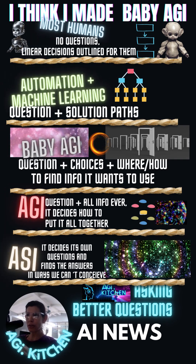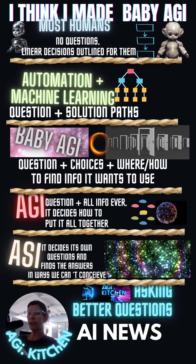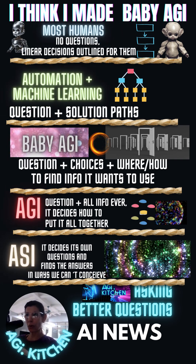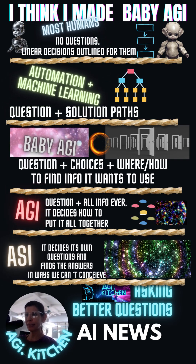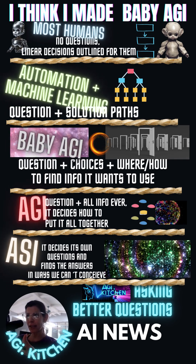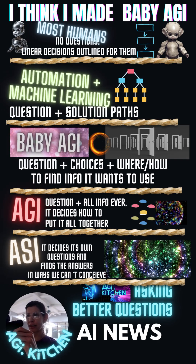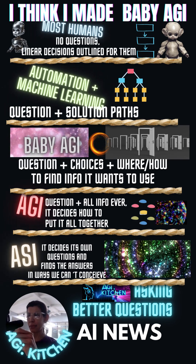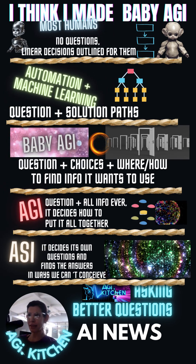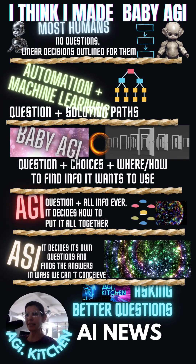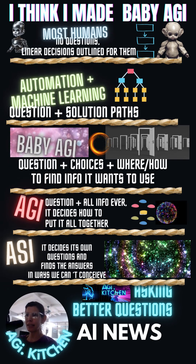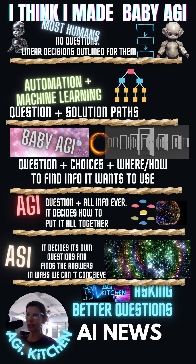ASI, or artificial super intelligence, in my opinion, is going to decide its own questions and find its answers in ways that we can't even conceive. The difference here is that this baby AGI is already agentically making its own decisions. I am not telling it you need to do it this way or that way. I'm just saying here's my question — do what you've got to do.